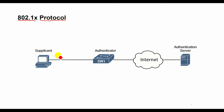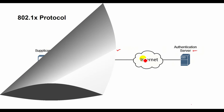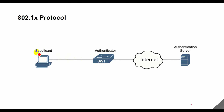There are three main components: the Supplicant, the Authenticator, and the Authentication Server. The Supplicant is the user or client requesting access to the network. This is usually the 802.1x enabled port on the device that requests access to LAN and switch services and responds to requests from the switch. In the figure, this is a PC running 802.1x compliant client software.